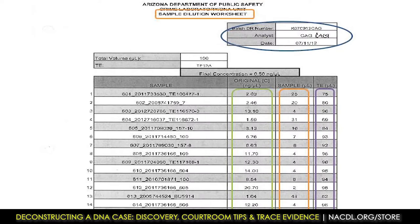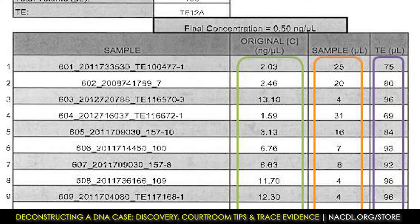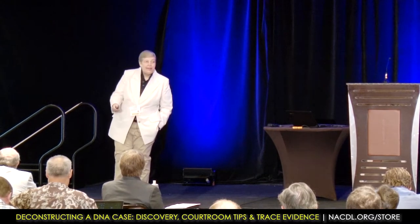The sample dilution worksheet—if they have too much DNA, they need to dilute the DNA to get to the target area. So oftentimes you'll see a sample dilution worksheet. You want to look at the batch, the analyst, the date, the number of microliters per microgram, and how much sample per microliter. The top one there has 25 microliters in the little tube and we need to get all of those to 100 microliters. The last column shows how much TE buffer needs to be added to obtain the 100 microliters.